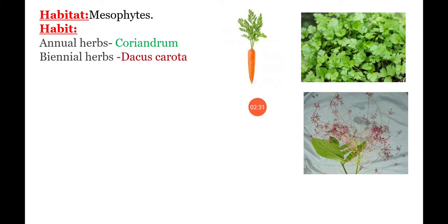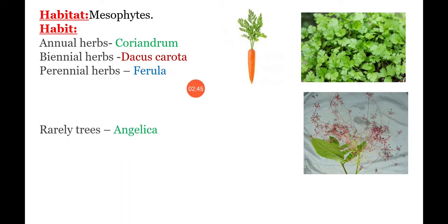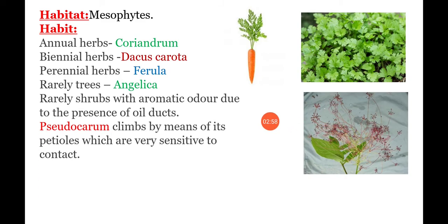Biennial herbs: Dacus carota, Carrot, is a biennial herb. Next, Perennial herbs: Ferula asafoetida is a perennial herb. Rarely, trees are present in this family — example, Angelica. And rarely shrubs are also present in this family.